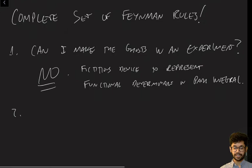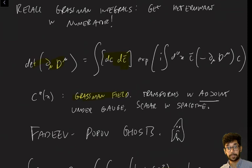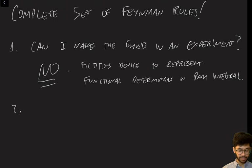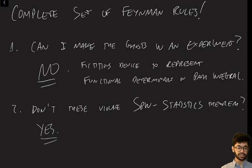Here's another concern: the ghosts are anti-commuting Grassmann fields, but they don't have spinner structure — they're not spinor fields, there are no gamma matrices, they are scalars in spacetime. This seems to violate the spin-statistics theorem, which I told you about earlier. Because they're spin-zero but also anti-commuting Grassmann variables, they do violate that theorem. But again, that's okay — there's no such thing as an external ghost state, so it doesn't matter.